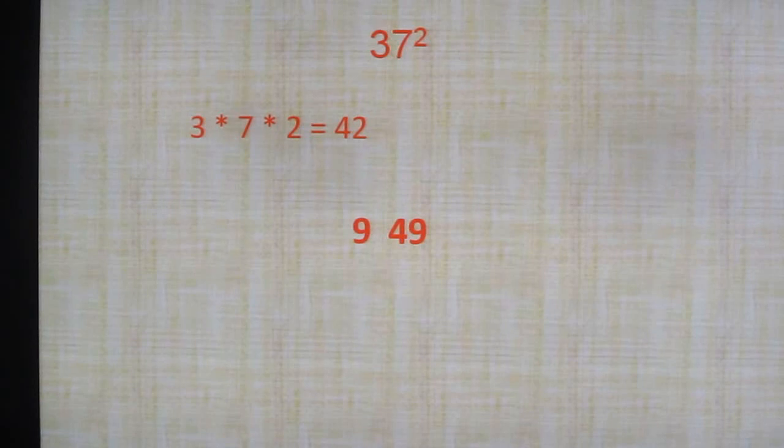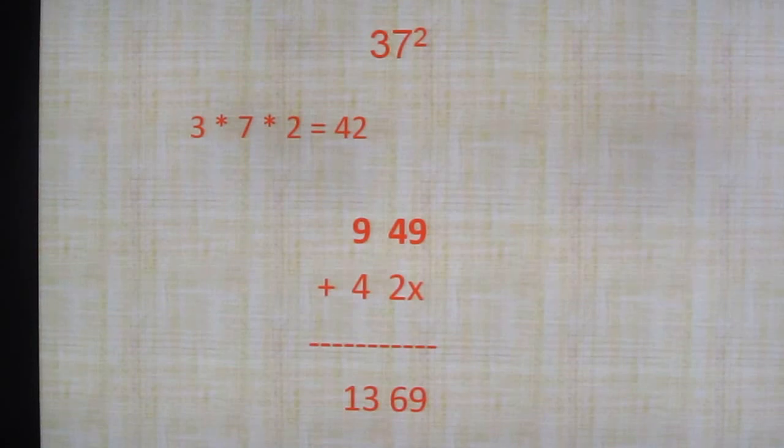Now what we have found in the previous slide? 9 and 49. 3 square is 9, 7 square is 49. Now just below 9, put an X mark. Why? Because that 9 hereafter won't change. Only in the first line we are getting 9. Hereafter that 9 won't change. One's digit will not change. Now write 42 very close. Once you add this up, what you will be getting is 1369.